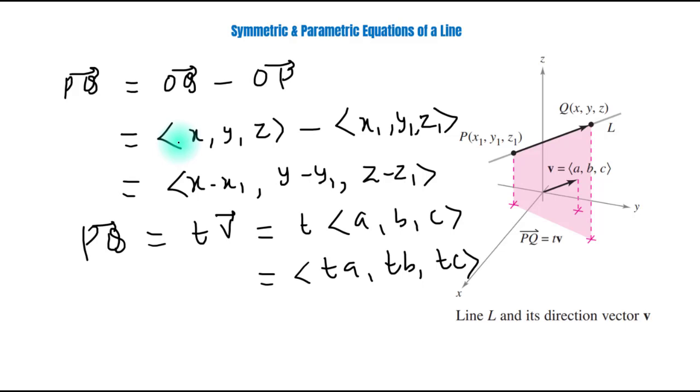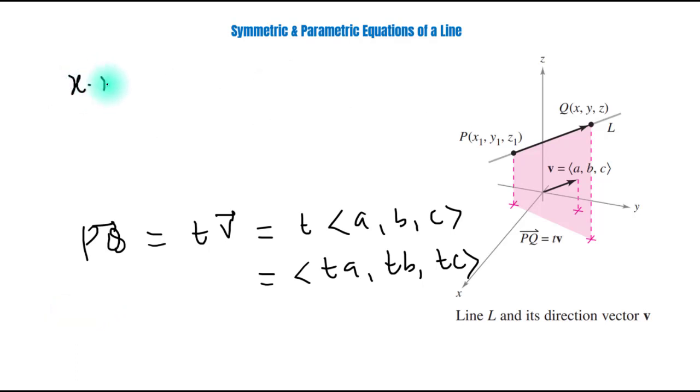Now, we will equate x, y, and z components of the vectors. So, we can write x minus x1 equals t times a, y minus y1 equals t times b, z minus z1 equals t times c.